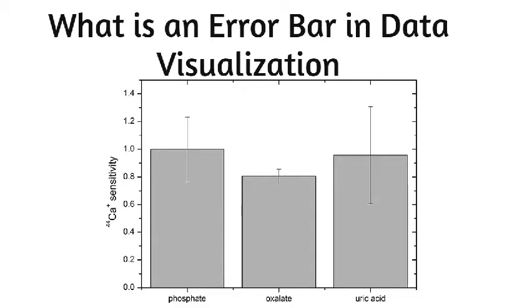To visualize this information, error bars work by drawing cap-tipped lines that extend from the center of the plotted data point, or edge with bar charts. The length of an error bar helps reveal the uncertainty of a data point.